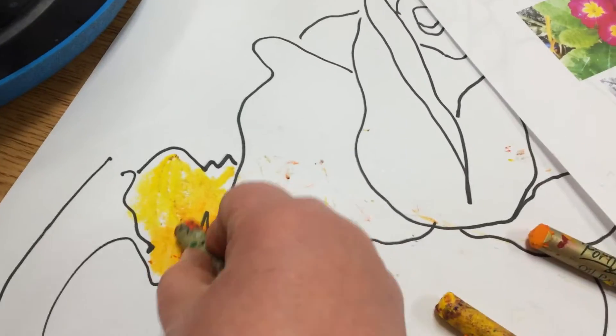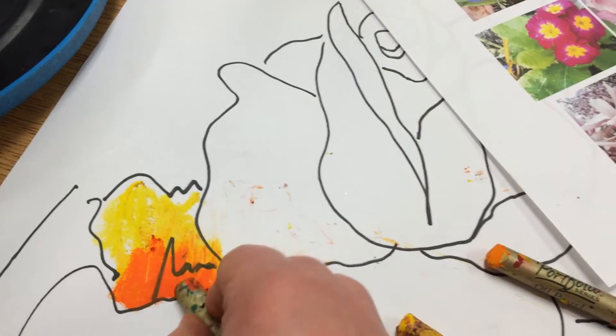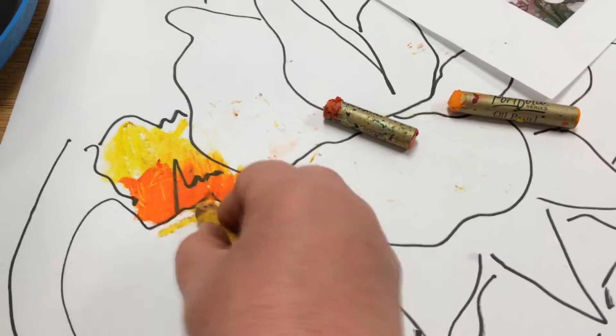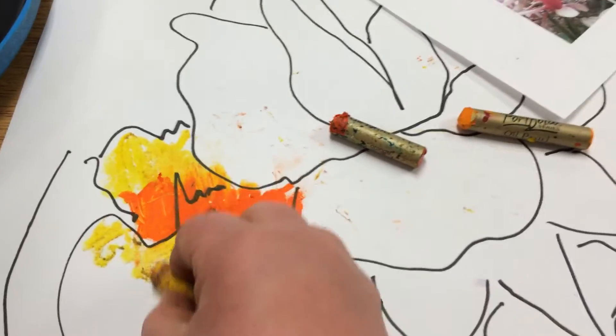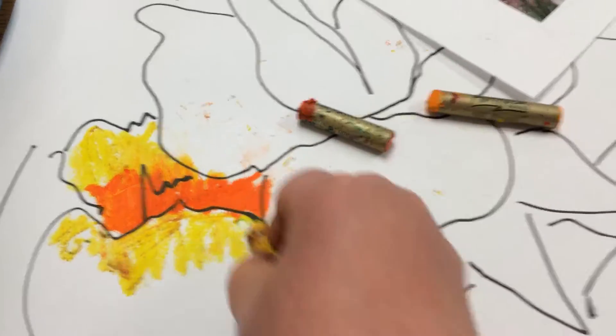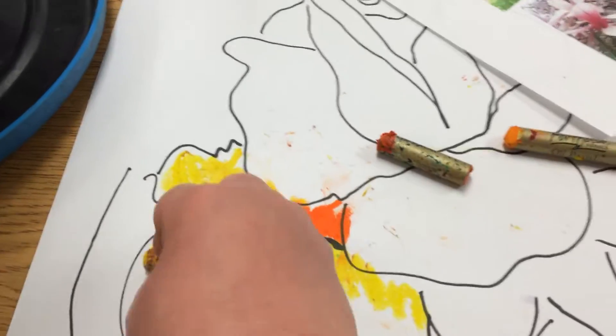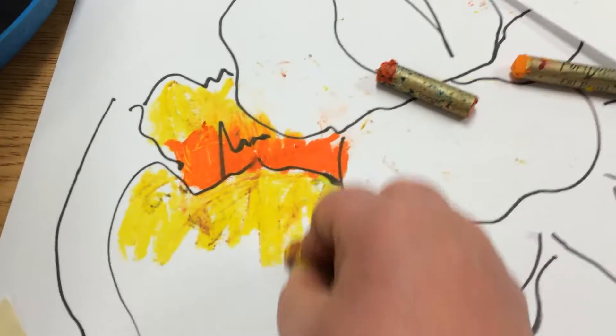The trick is you don't end the color with a hard edge. You kind of press down and lift up as you get farther away from the center of the petal, and then the lighter color you actually color over the darker color so you have a blending where the two colors meet.